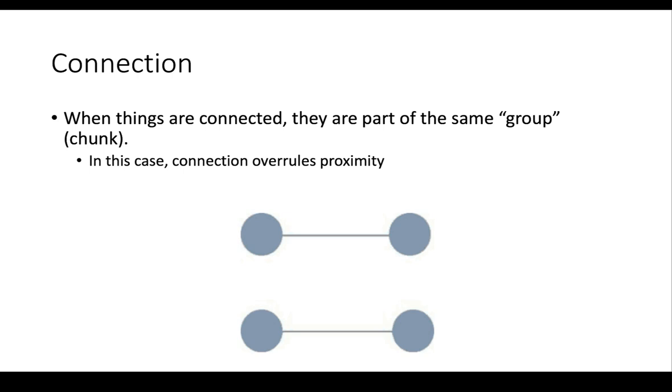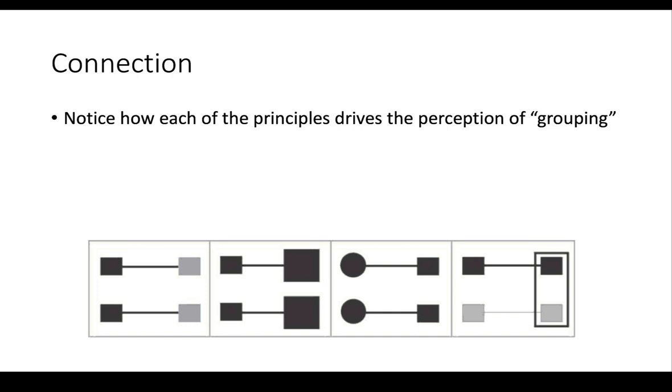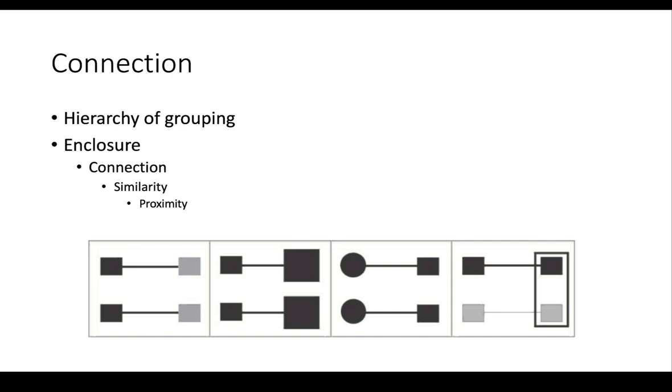Now, when we connect things, they really become one. They really become part of one chunk. And connection overrules proximity, and it overrules pretty much everything except maybe enclosure. These different principles have different levels of strength. Proximity is pretty much the weakest. Connection and closure are the strongest. And look at our grouping here. Sameness, proximity, these two are the same. These two are close, but they're not the same, and they're enclosed in different groups. They're not perceived as being the same. And so enclosure is the strongest, then connection, similarity, and proximity. If you really want to drive things home, enclose things, connect things.